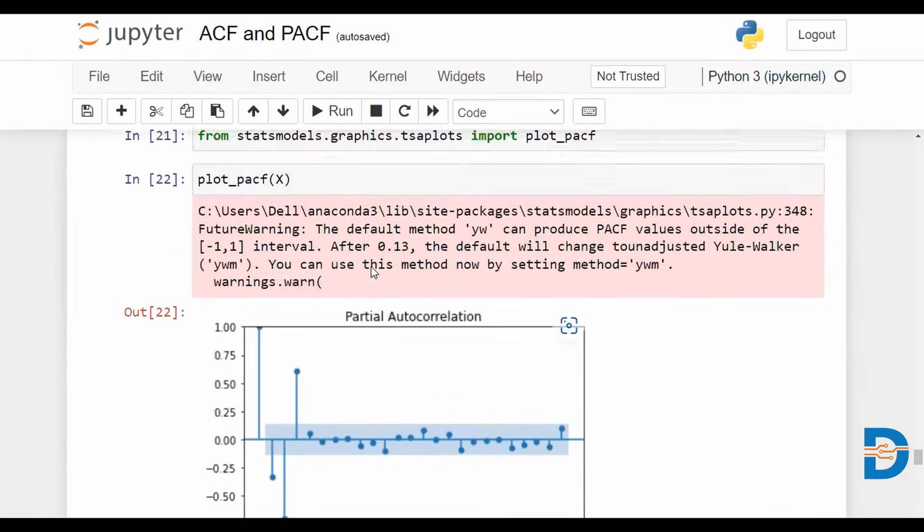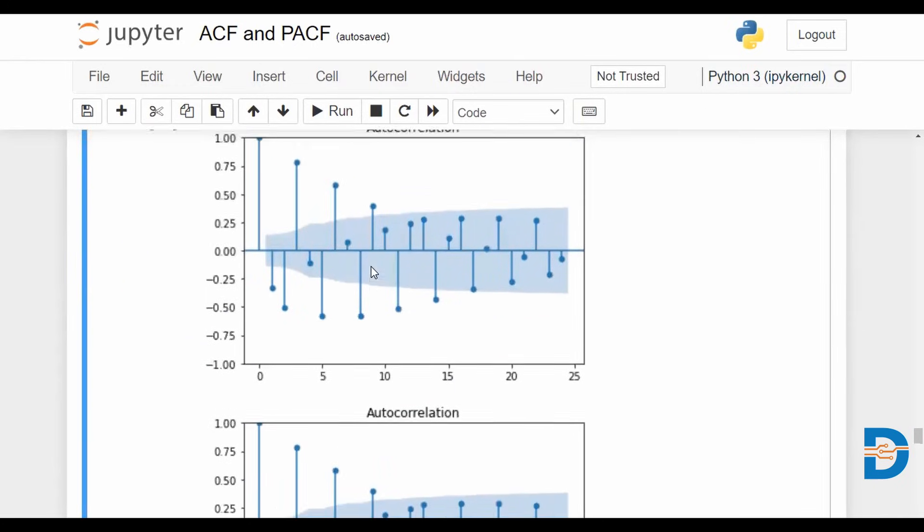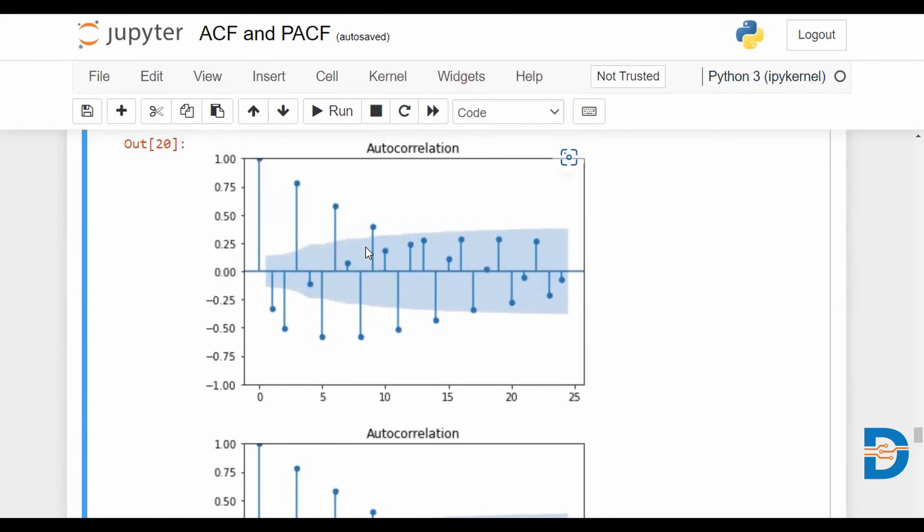We do have an example here where there is a bit of shutting off going on in the ACF plot. And really for the moving average, we would be considering the ACF plot to determine this order Q. Here, where it is really shutting off is at this point, we still have some pretty strong values.